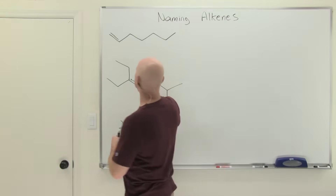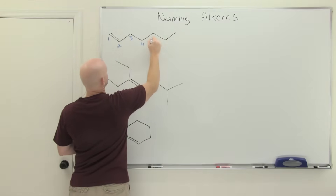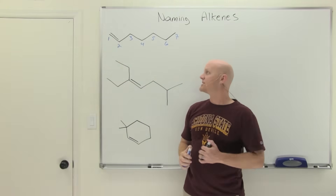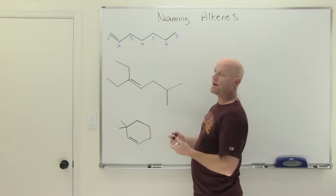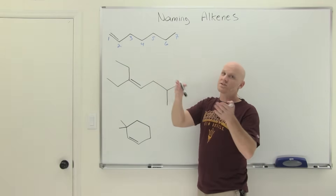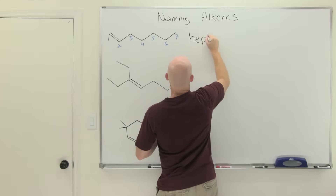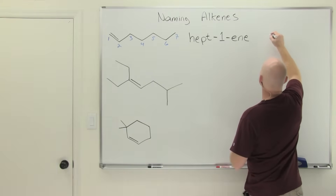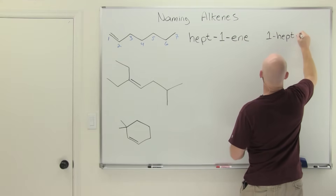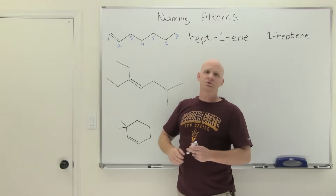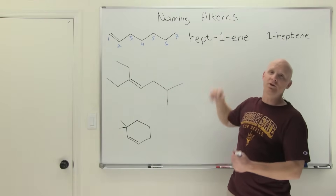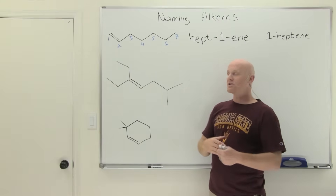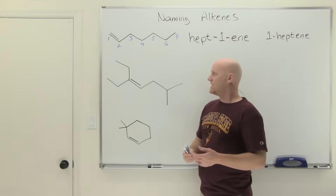You want to number the chain to give the double bond the lowest possible number. Here, numbering left to right gives the alkene between carbons one and two, and you always give it the lower of the two designations, so it's at position one. Instead of just saying heptane or heptene, we say hept-1-ene — this is the most accepted form. Also acceptable is 1-heptene. When multiple functional groups are part of the parent chain, you put the number in the middle of the word right before the suffix. If the alkene is the only major functional group, you can put the number out front.